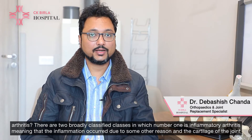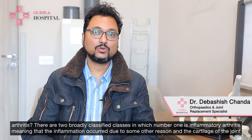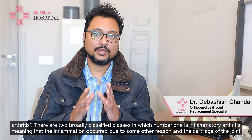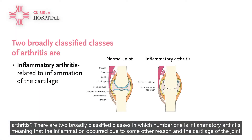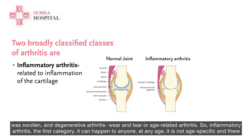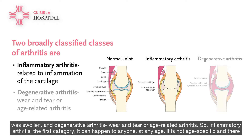What are the types of arthritis? There are two broadly classified classes: number one is inflammatory arthritis — matlab ki kisi aur karan se inflammation hua aur joint ke cartilage sooj gaya — and degenerative arthritis, which is wear and tear or age-related arthritis.